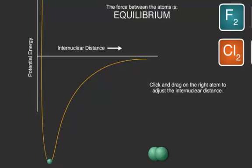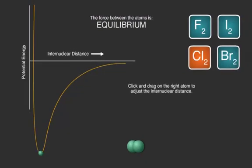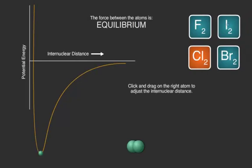We can look at this simulation to help us understand how potential energy changes depending on how close or far apart atoms are. First, let's look at iodine. If I have two iodine atoms together in a diatomic molecule, I can see they reside at some minimum potential energy.